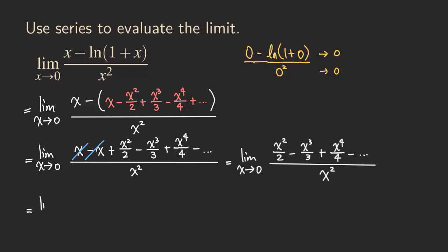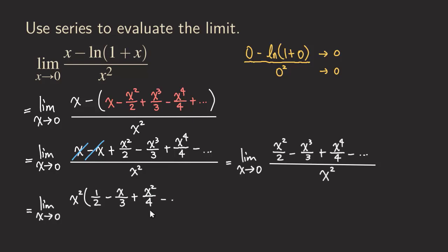Now we can factor out x² from every term in the numerator. We are going to get x² times the quantity: one half minus x over 3 plus x² over 4 minus dot dot dot. The denominator is already x², so we leave it as x².